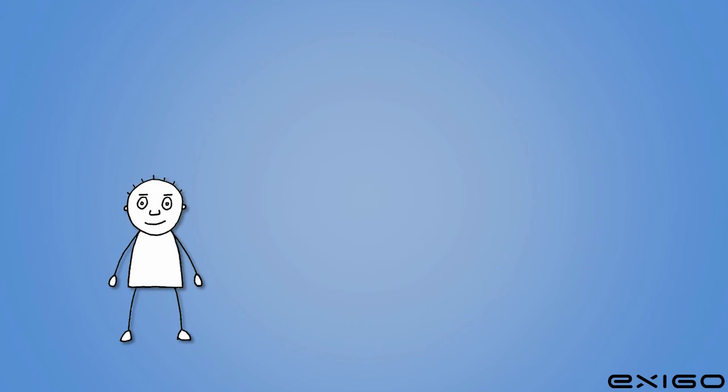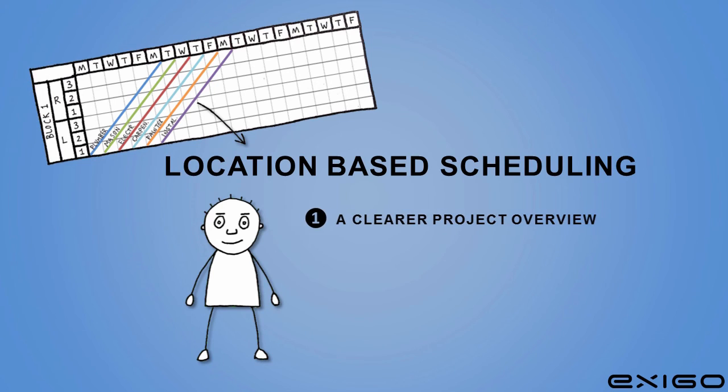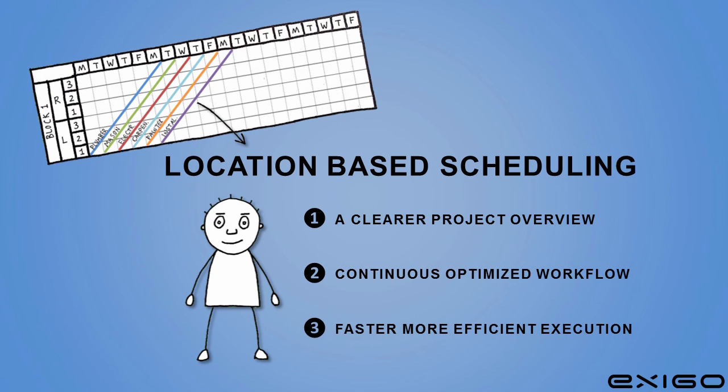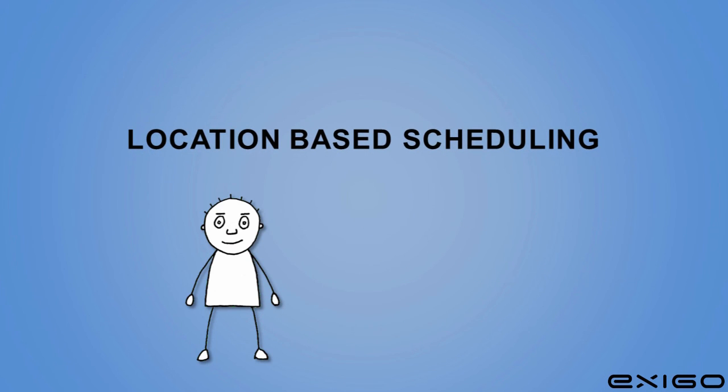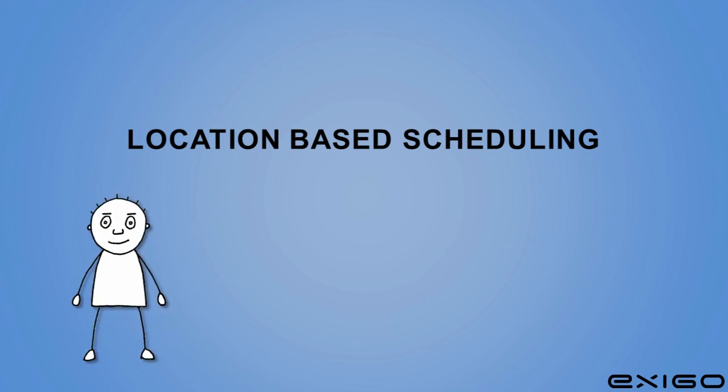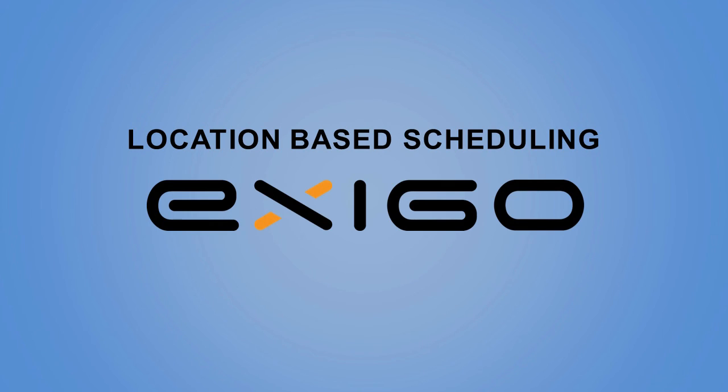With location-based scheduling, you'll get a clearer overview of the project, continuous, optimised workflow, and a more efficient and proven to be up to 20% faster execution. To John, this means more profits, and certainly winning more projects as a result.